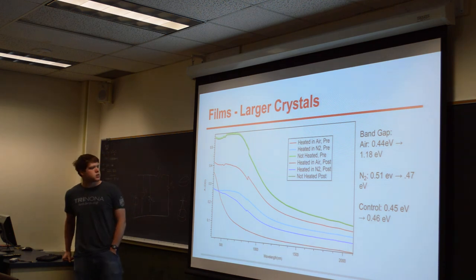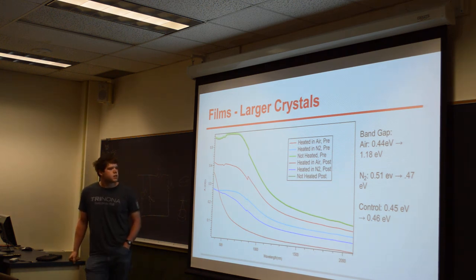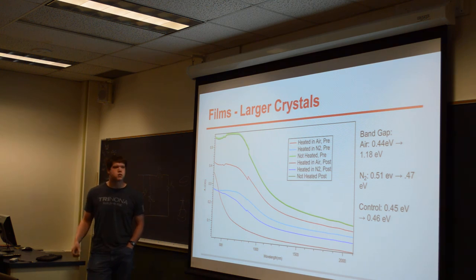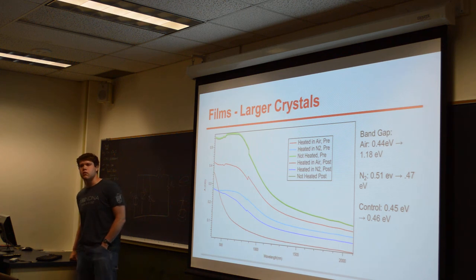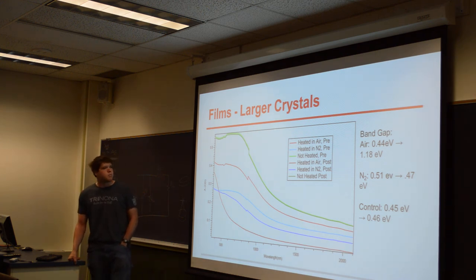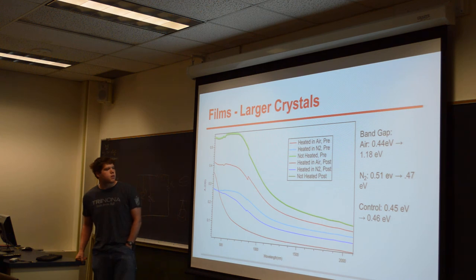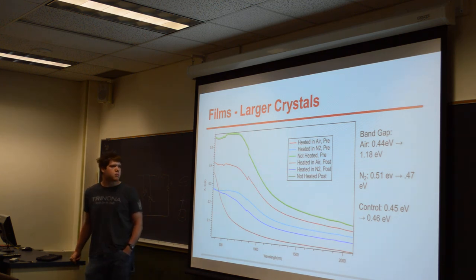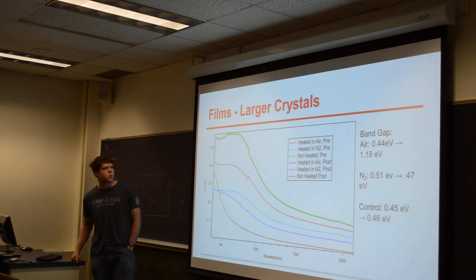Here are the absorption spectra for these films. The control didn't change, which is good. The film heated in nitrogen changed a little bit — we think that was probably due either to annealing of the crystals or the ligand evaporating off further, which would change the dielectric environment for the films. But we saw a large shift for the sample that was heated in air, and that was the only one that had an actual shift in the band gap. This oxidation raised it from about 0.4 electron volts to about 1.18 electron volts, which is a promising result, because 1.18 electron volts would be a pretty good value for a solar cell material.